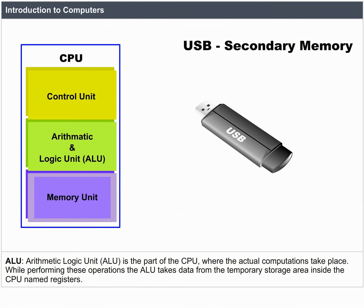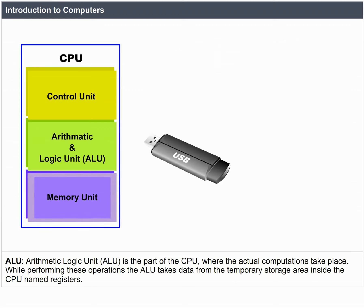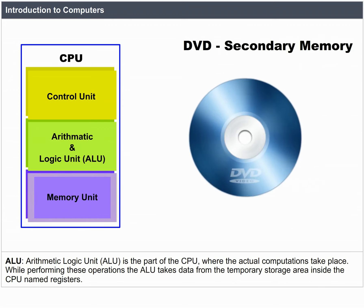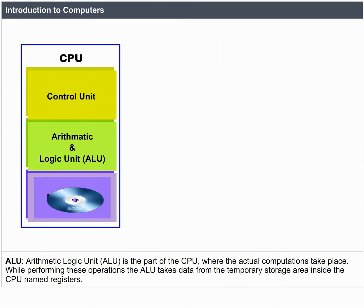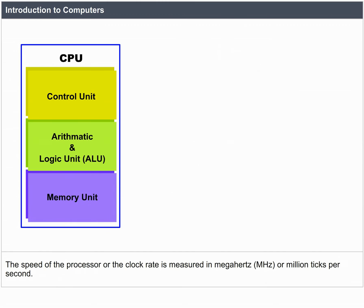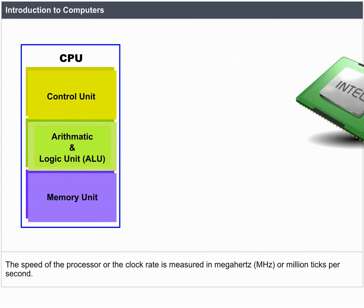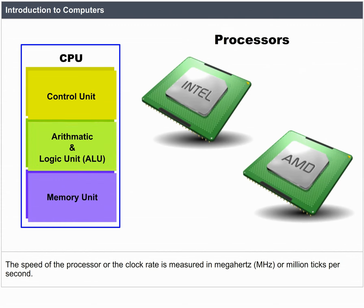The ALU is a part of the CPU where the actual computations take place. While performing these operations, the ALU takes data from a temporary storage area inside the CPU called registers. The speed of the processor, or the clock rate, is measured in megahertz or million ticks per second.